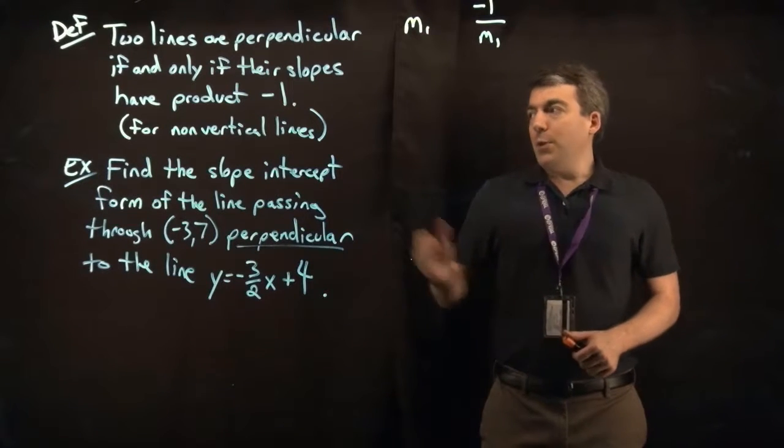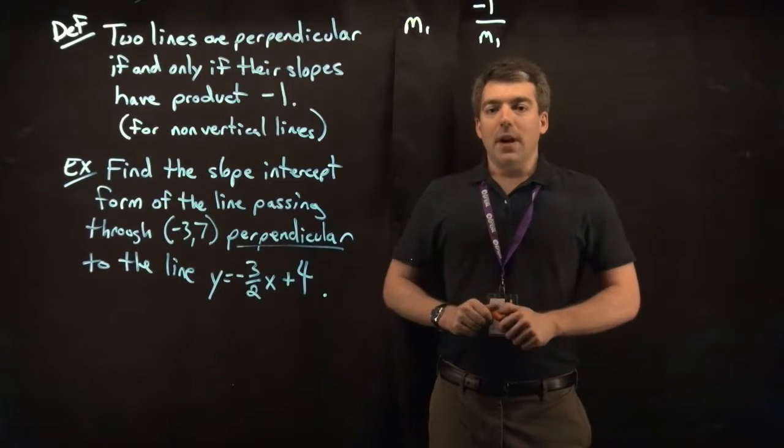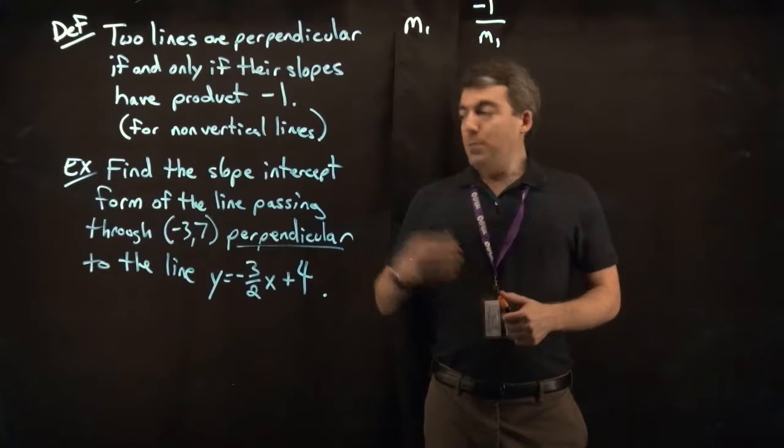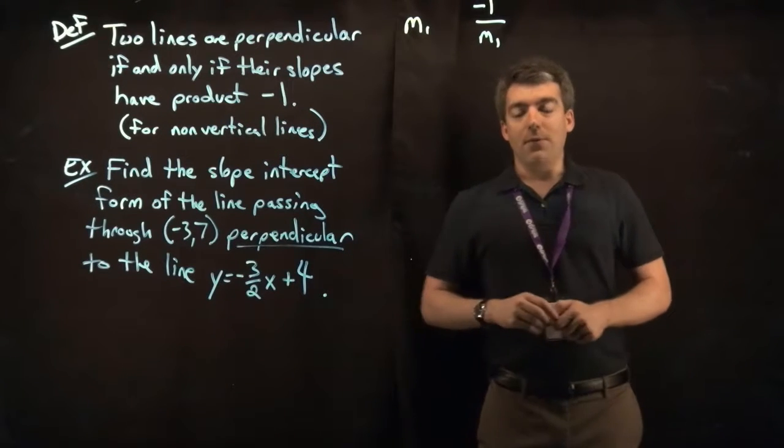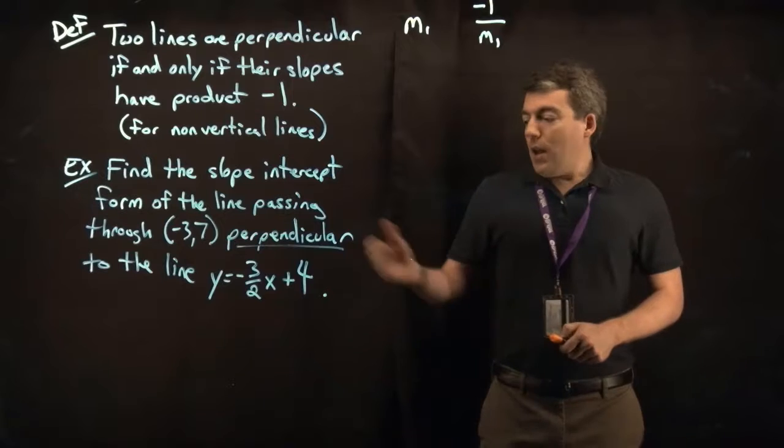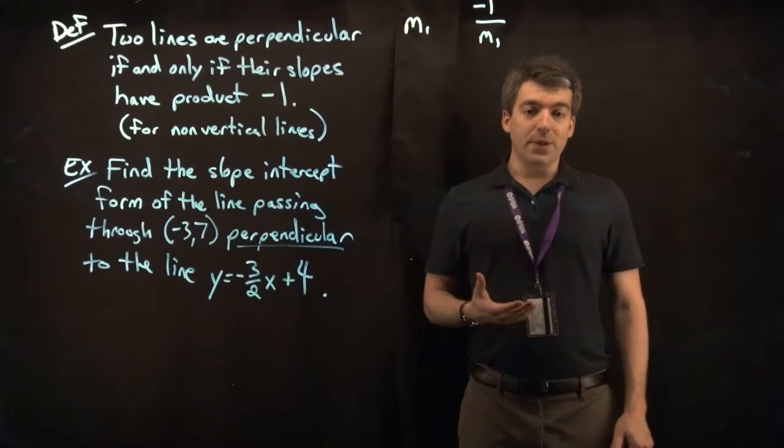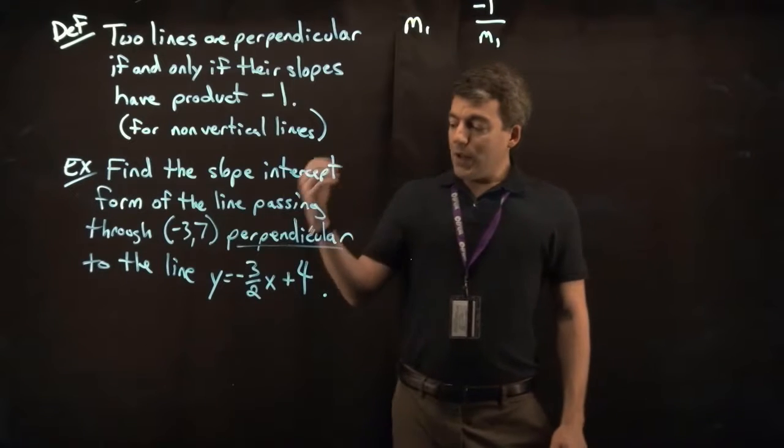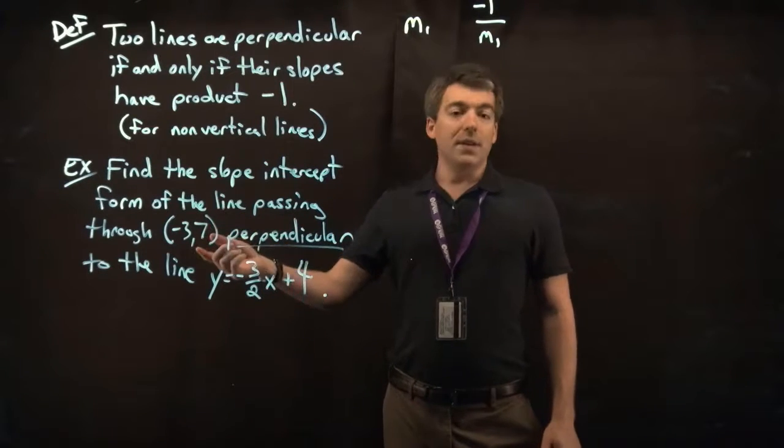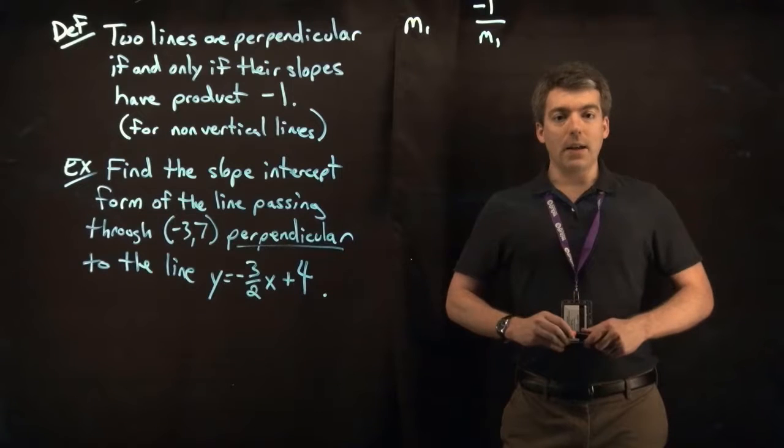Now since we know that perpendicular lines have opposite reciprocal slopes, or in other words their slopes have a product negative 1, we'll need to identify the slope from this line, take its opposite reciprocal, and then use that slope with this point to write the slope-intercept form of the line.